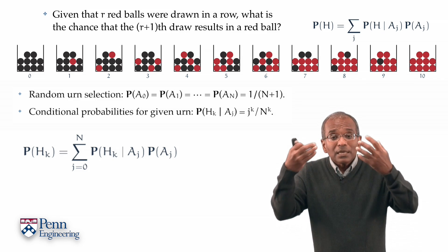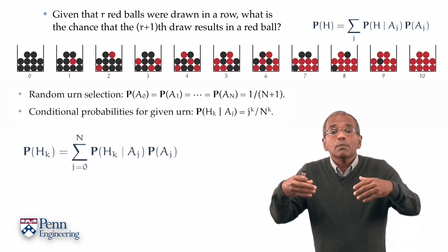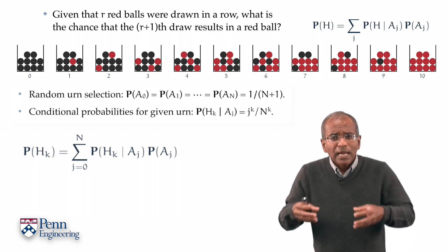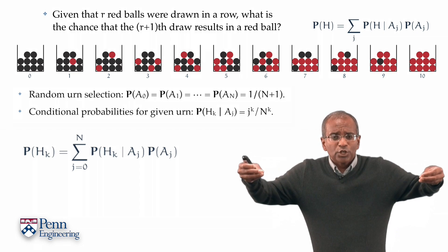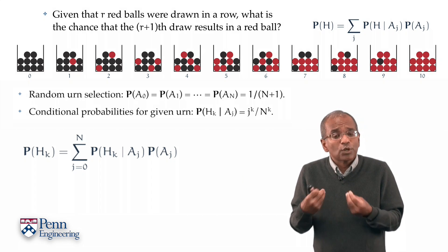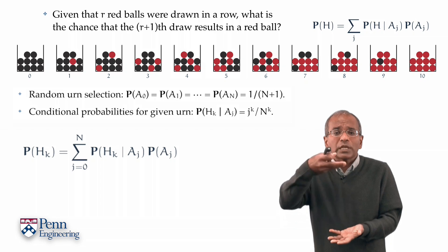We naturally decompose this event in terms of the ancillary events A0, A1 through An, which tell us which urn was selected. Now we've got a chain rule for conditional probability. Observe that in this sum, it was more natural to begin the sum at j equal to 0 and run it all the way up till n.